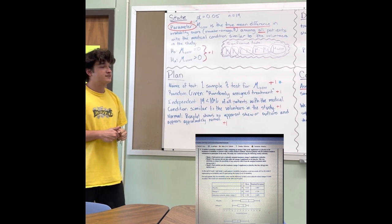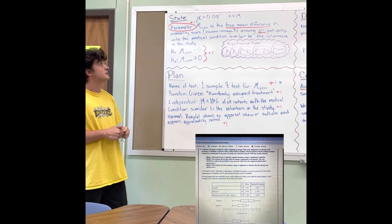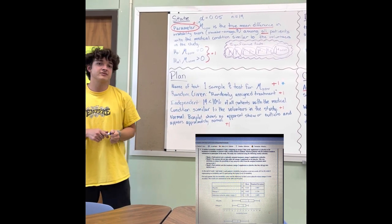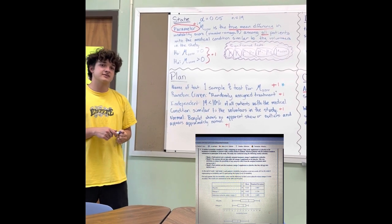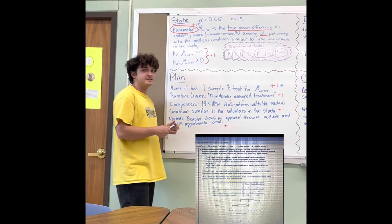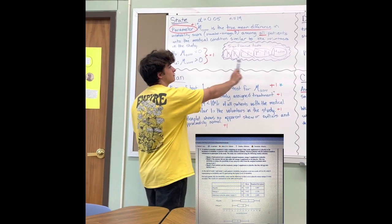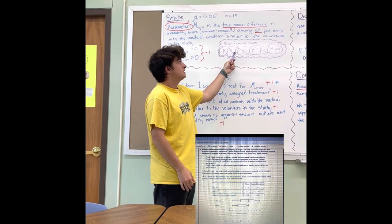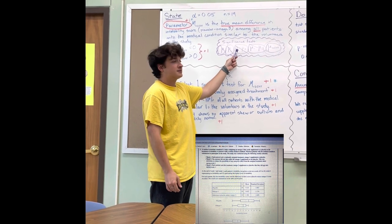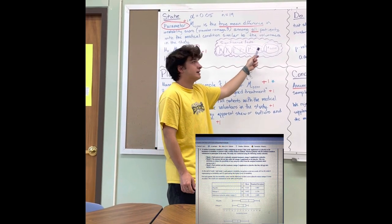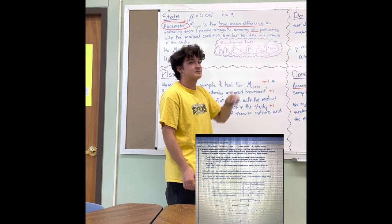Now we're going to have to state the parameter. This is the tricky part because we have to figure out which significance test we're doing. In AP Stats, we've learned about five different tests: mu, p, p1-p2, mu1-mu2, and mean difference.